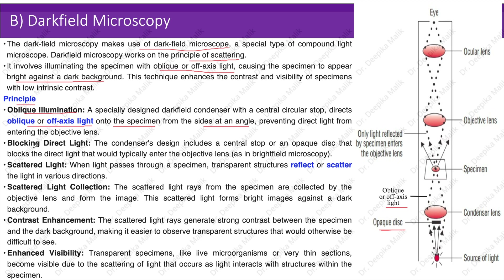Blocking direct light: the condenser's design includes a central stop or an opaque disc that blocks the direct light that would typically enter the objective lens, as in bright field microscopy.